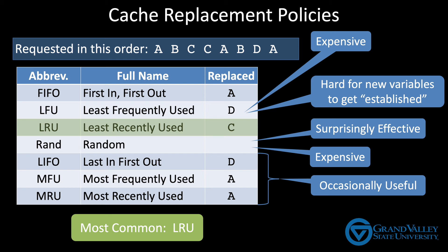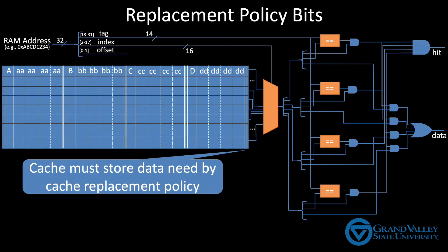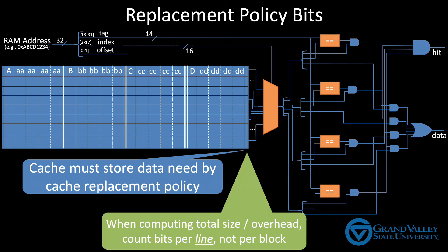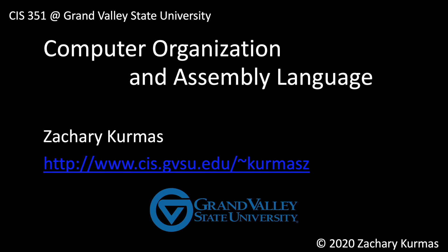Most cache replacement policies need to collect some data so they can decide which block to evict. For example, the least frequently used algorithm needs to keep a count of how often each block in the cache is accessed. This data has to be stored in the cache and contributes to the cache's overhead. The specific number of bits needed varies from algorithm to algorithm, but for consistency, I will always count these bits per line rather than per block — grouping them together conceptually at the end of a line in the cache. In the next video, we'll focus specifically on LRU and a more efficient approximation called pseudo-LRU.